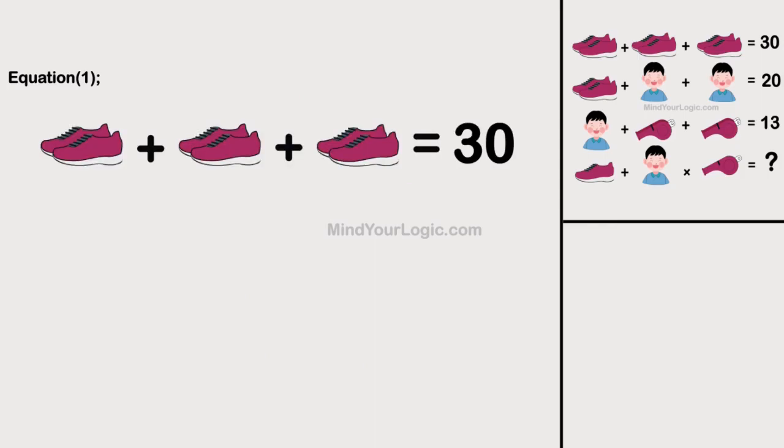Initiating with equation 1. Pair of shoes plus pair of shoes plus pair of shoes equals 30. On simplifying, we get the value of pair of shoes as 10.